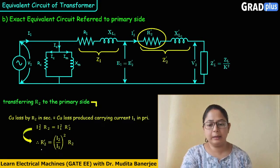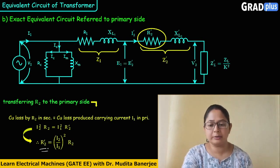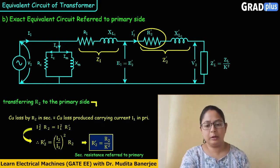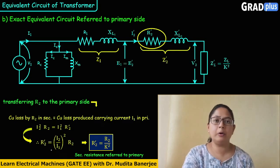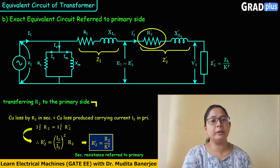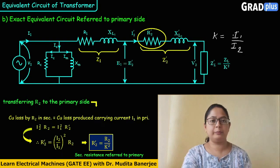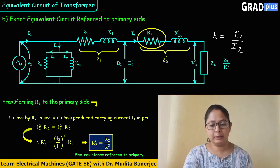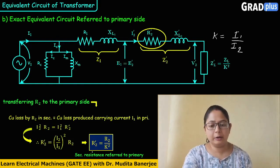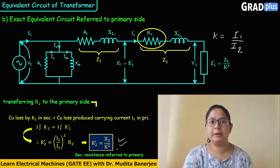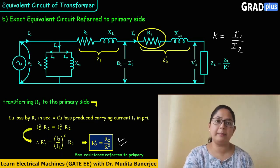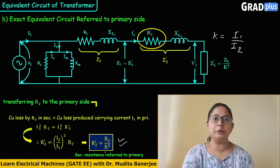Rearranging to find R2 dash: R2 dash = (I2/I1)² × R2. The transformation ratio K = I1/I2, so I2/I1 = 1/K. Therefore, R2 dash = R2 / K². This is the value of resistance when it is referred to the primary side.